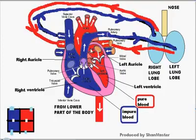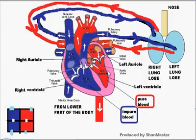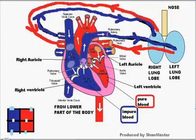Through an echo test we can measure the flow of blood from auricles into the ventricles. We can measure the thickness of the interventricular valve, interauricular valve, and the valves of the heart. That is the circulation of blood in the heart.